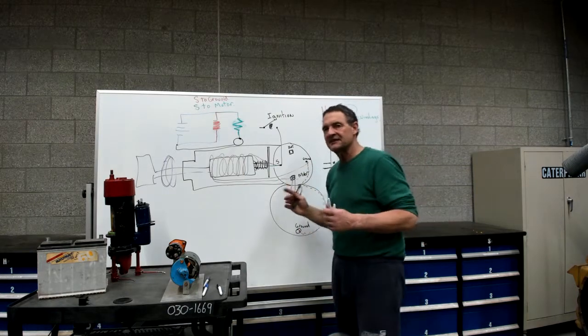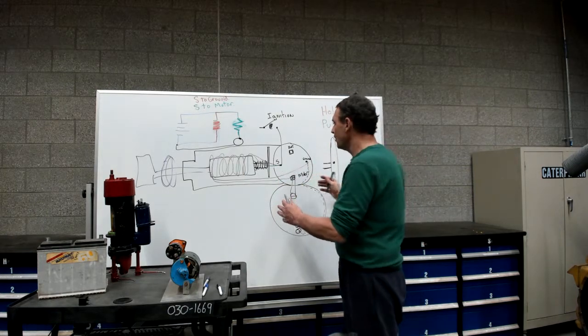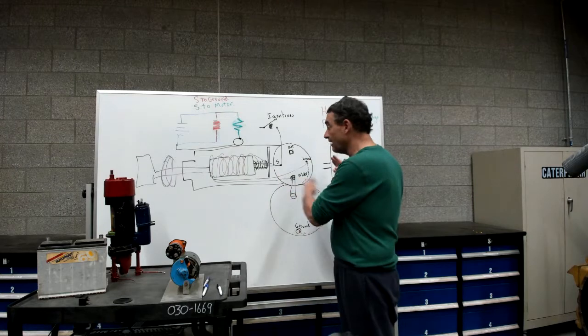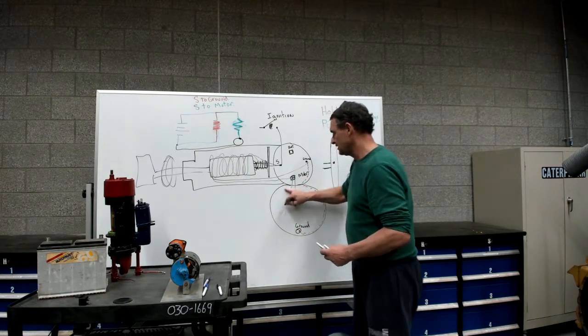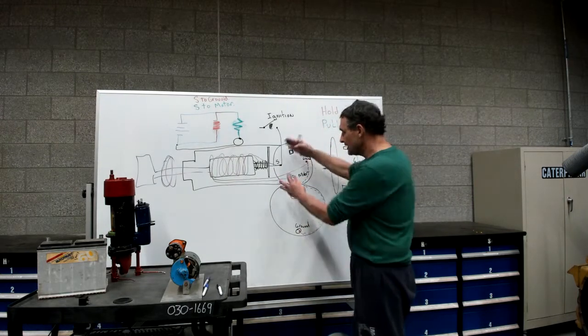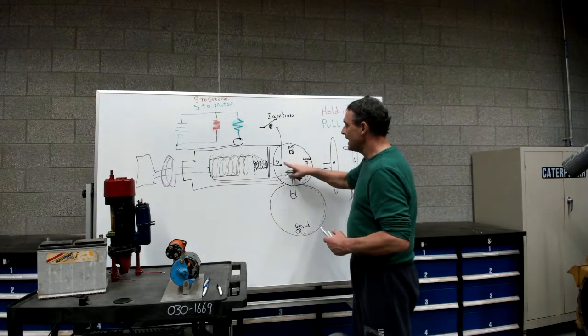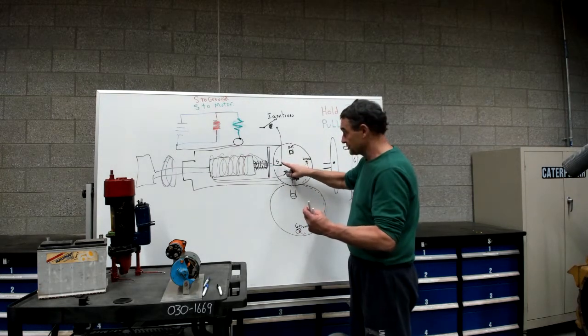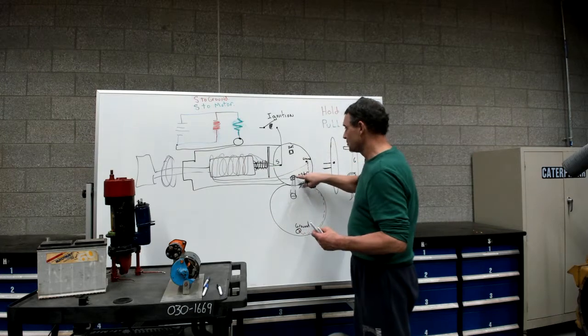So how does that affect us when we want to check this? Obviously, we're going to pull the solenoid off of the starter motor, so this here will have a broken connection, but the rest of the connections are there. We have the S terminal where both wires are connected, the battery terminal, and the motor terminal.